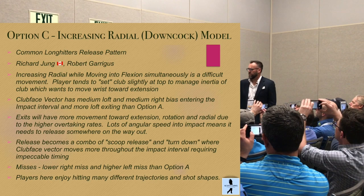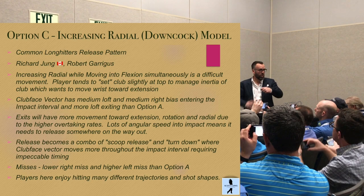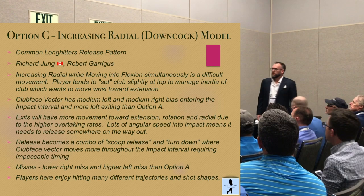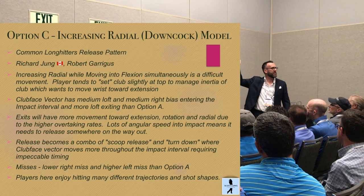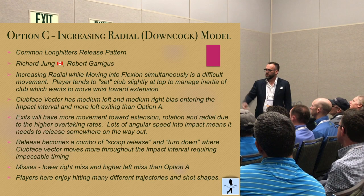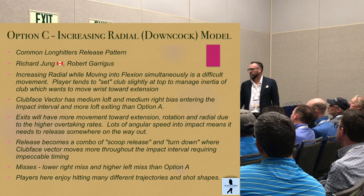Another player I'd classify in this category would be Robert Garrigus — very similar: a lot of down-cock but also a lot of flexion at the same time. Obviously smashes the ball. We're increasing radial while moving into flexion simultaneously — it's a difficult movement. These players tend to have more of a set at the top of their swing. You saw Richard kind of get there, set it, ease it down, and add the speed at the bottom. If they ever get quick in transition, they'll probably struggle.